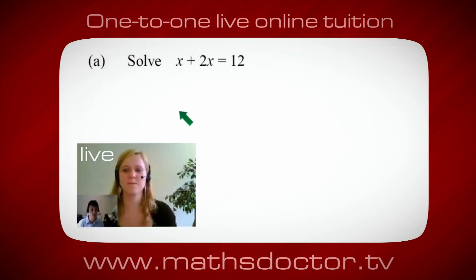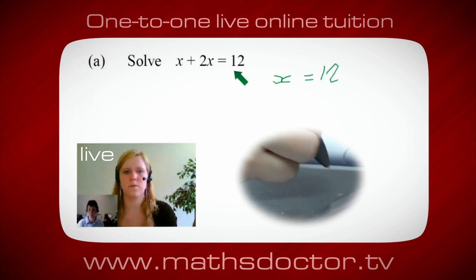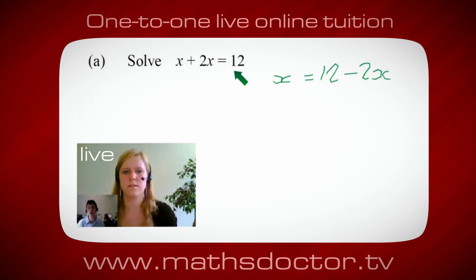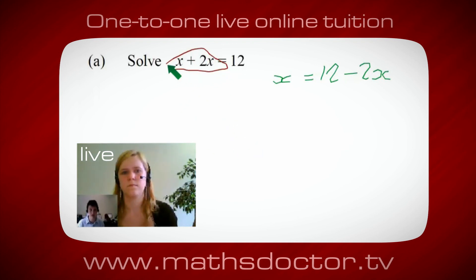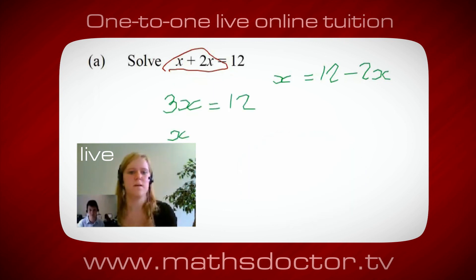Let's look at this one: solve x plus 2x equals 12. What do you do first? Well, we want all the x terms together. Can you see what we can do? It's 3x, isn't it? So 3x equals 12, and therefore x equals 4. Brilliant — spot on.